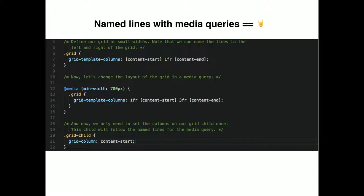You might be able to have two named lines right next to each other — like sidebar-start and sidebar-end, then content-start. I haven't used this functionality much. But it's all relative and you don't have to calculate anything, especially with the FR units.